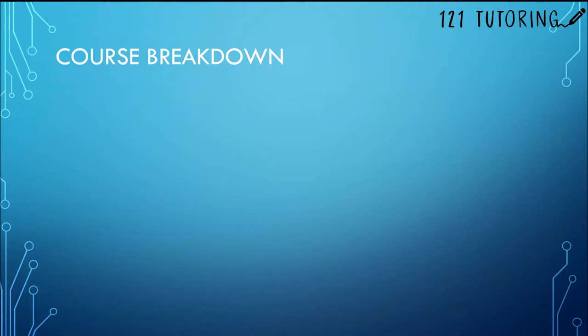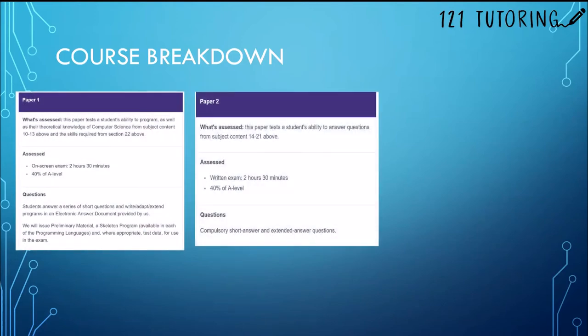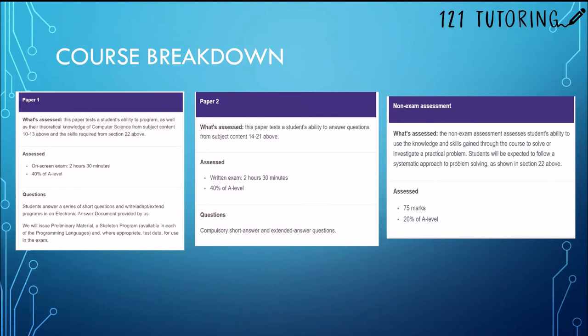AQA assesses students across two papers with a non-exam assessment assessing problem solving skills. Paper 1 covers most of the programming side where you look at data structures and algorithms as well as some theory of computation. Paper 2 covers the fundamentals of computers and how their architecture is used in networks and databases across the world.